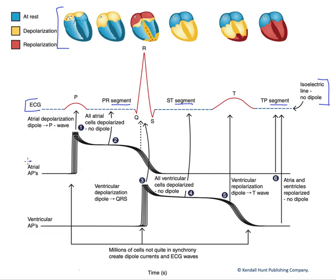Below that, we have our atrial action potentials followed by our ventricular action potentials. Now certainly, there are millions of cells in the atria and probably hundreds of millions of cells in the ventricles. We're only showing you about five action potentials here from each, so it's just representative. But what we're trying to indicate is that the cardiomyocytes of the atria or the ventricles do not depolarize and repolarize in synchrony.